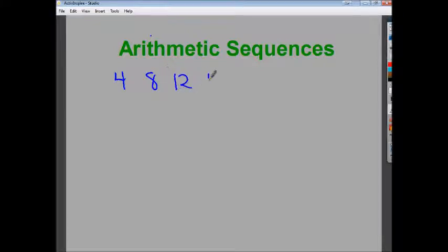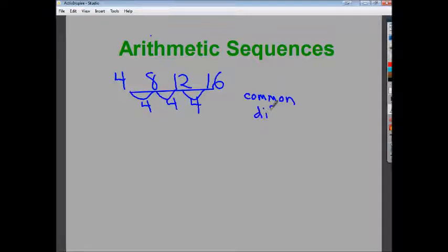So 4, 8, 12, and 16 is a perfectly acceptable arithmetic sequence because it changes by 4 every time. Now, the common number that they have is referred to as the common difference. The common difference can be negative, and the variable that they use for common difference is the letter D.